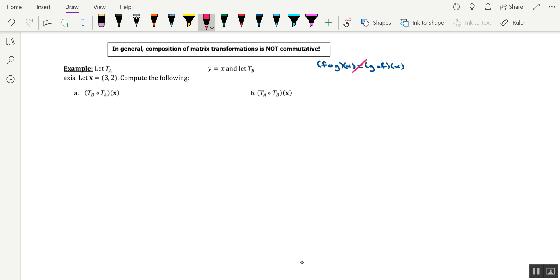It doesn't mean it'll always be the case, but when it comes to compositions, whether it be with functions or matrix transformations, a lot of the times the order in which you perform the composition will create different standard matrices, much like the order in which you do the composition with regular functions creates different functions. In general, composition of matrix transformations is not commutative.